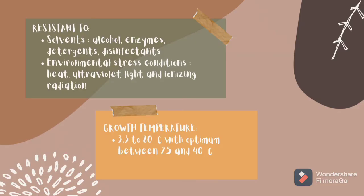Clostridium, which is resistant in meat patty, is also resistant to compounds such as alcohol, enzymes, detergents, and disinfectants. For environmental stress conditions, it is resistant to heat, ultraviolet light, and ionizing radiation. Its growth temperature range is between 3.3 to 80 degrees Celsius, with an optimum between 25 and 40 degrees Celsius.